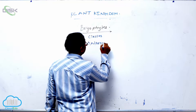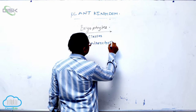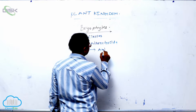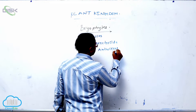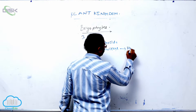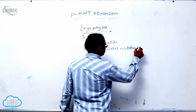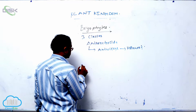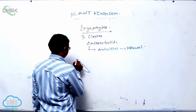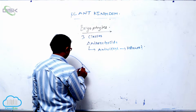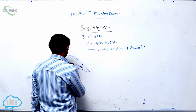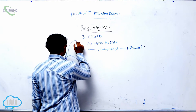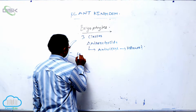The next class is Anthocerotopsida, with an example being Anthoceros. Anthoceros is generally known as hornwort. It also has a thallus plant body like structure, but it produces horn-like structures which are the sporophyte.